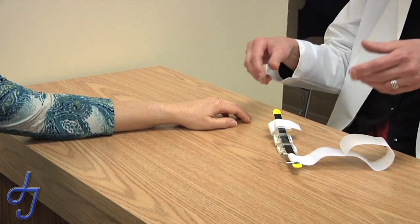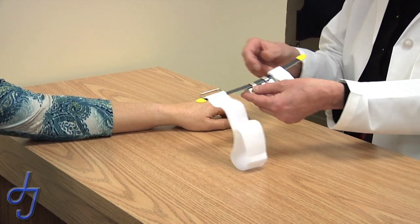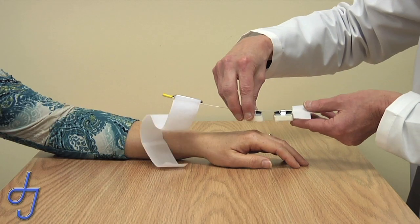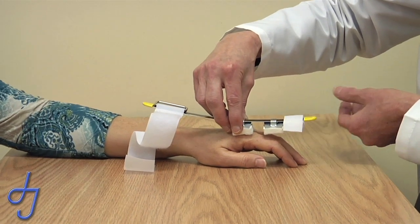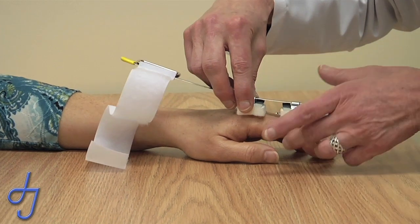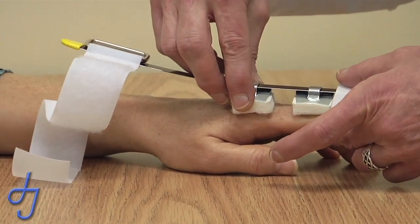To fit the joint spring, you're going to position the pads so that they are over the metacarpal phalangeal or MP joint and the proximal interphalangeal joint.